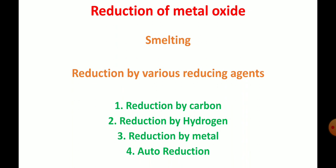Reducing agents can include many elements. For example, the reduction can be carried out by using carbon as a reducing agent, by using hydrogen as a reducing agent, by using a metal as a reducing agent, and the final special case is auto reduction. So the 2 main headings under reduction of metal oxide are smelting and reduction by various reducing agents.